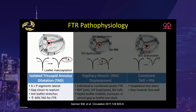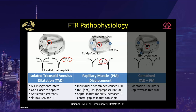Spinner et al conducted an elegant in vitro experiment on porcine hearts to determine the effect of annular dilatation and papillary muscle displacement in functional tricuspid regurgitation. Isolated annular dilatation moves the anterior and posterior annular segments laterally, creating a gap between the three leaflets closer to the septum. A 40% increase in annular area occurs before coaptation reserve is exhausted and regurgitation develops. Papillary muscle displacement — individually or combined — can lead to significant TR in the absence of tricuspid annular dilatation. RV dilatation displaces the anterior papillary muscle, LV dilatation displaces the septal and posterior, and biventricular dilatation displaces all papillary muscles.